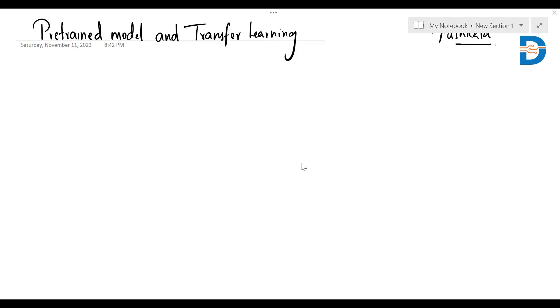Before going into pre-trained models, we have to know what is training a model first. Why are we going to use pre-trained models? So first let's talk about training a model. When we talk about training a model or pre-trained model, we are talking about deep learning neural networks.